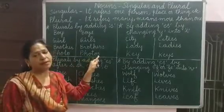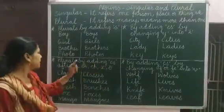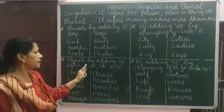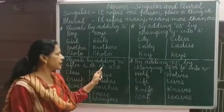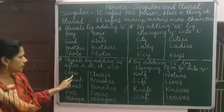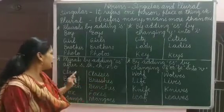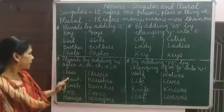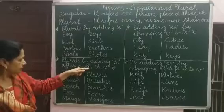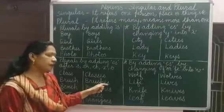Now, next: how to make plural by adding ES? When the noun ends with S, SH, CH, X, or O. For example, class — it ends in S, so we add ES to make the plural noun. Next is brush; as I have told you, if it ends with SH, then we write ES and it becomes a plural noun.